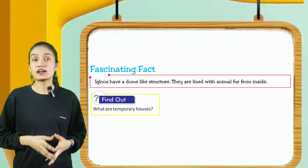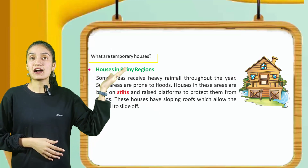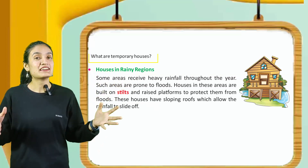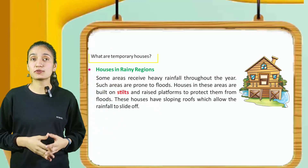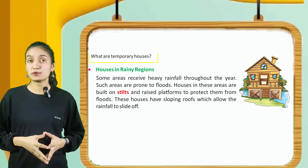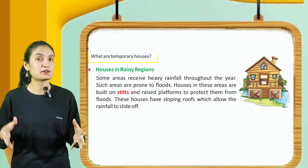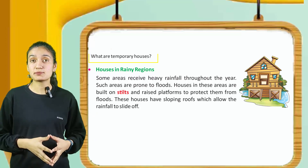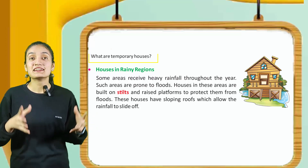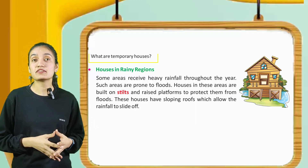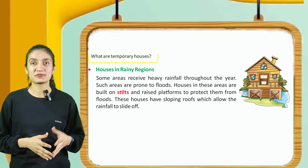It's time to find out what are temporary houses. Let's learn. Houses in rainy regions: some areas receive heavy rainfall throughout the year. Such areas are prone to floods. Houses in these areas are built on stilts and raised platforms to protect them from floods. These houses have sloping roofs which allow the rainfall to slide off.